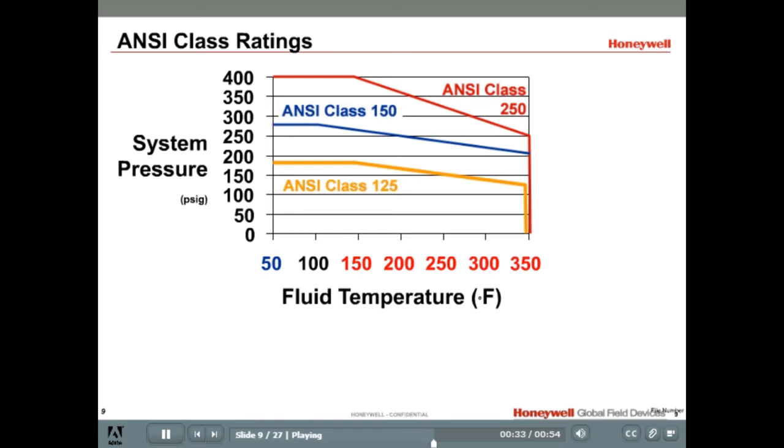This graph shows the temperature and pressure relationships between the different ANSI class ratings. If we look at a valve rated for ANSI class 150, then at, let's say, 200 degrees, the valve body is rated to handle a system pressure of 250 psi. In general, pressure rating increases as temperature falls.